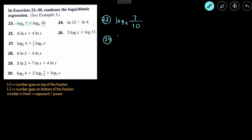Number 24: we see this is a natural log, so we carry the ln and set up a fraction. There is a positive in front of ln of 12, so 12 goes on the top. There's a minus, so the 4 goes on the bottom of the fraction. This simplifies to ln of 3.